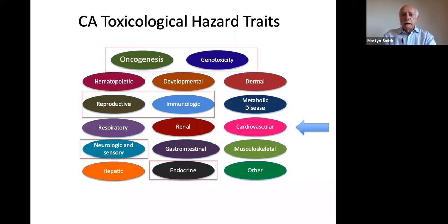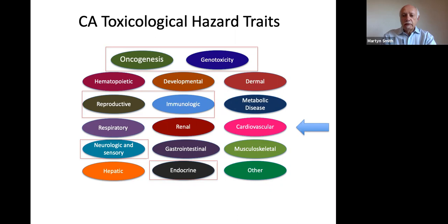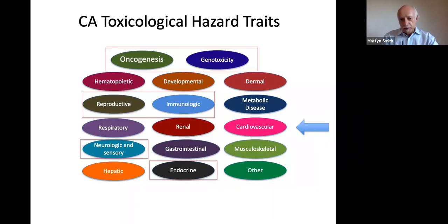These are the toxicological hazard traits in California. At the top are carcinogenesis and genotoxicity — this is where we focused first, developing the key characteristics of carcinogens. It also includes reproductive, neurologic, cardiovascular, endocrine, and immunologic traits — all of these are being developed at present or have recently been published. Eventually we hope to get key characteristics for all of these hazard traits.